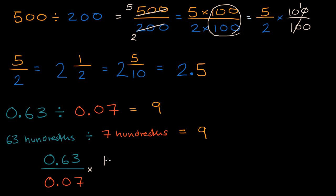So let's multiply the numerator by 100 and also multiply the denominator by 100. This doesn't change the value of the expression because multiplying by 100 over 100 is just the same thing as multiplying by one. So this would be equal to 63 hundredths times 100. Well, we would move the decimal two to the right. This is going to be equal to 63 over 7 hundredths times 100.